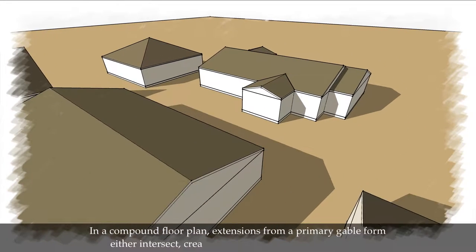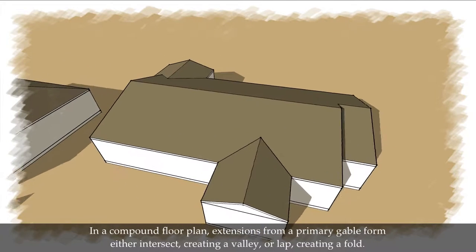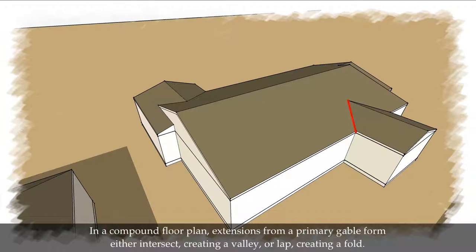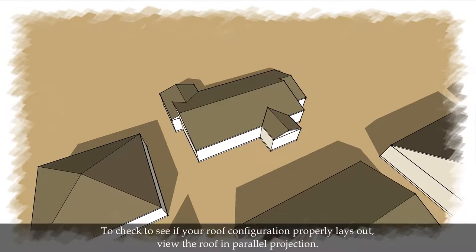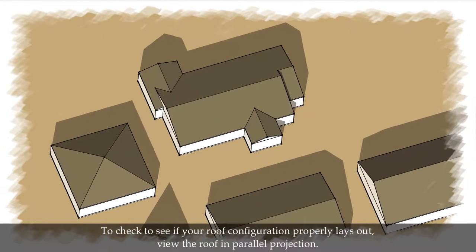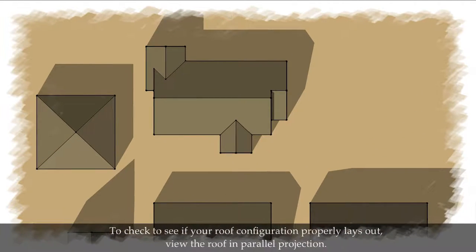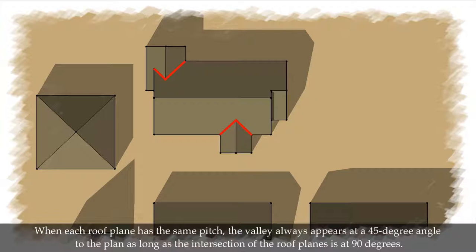In a compound floor plan, extensions of a primary gable either intersect creating a valley, or lap creating a fold. To check to see if your roof configuration properly lays out, view the roof in parallel projection. When each roof plane has the same pitch, the valley always appears at a 45-degree angle to the plan as long as the intersection of the roof planes is at 90 degrees.